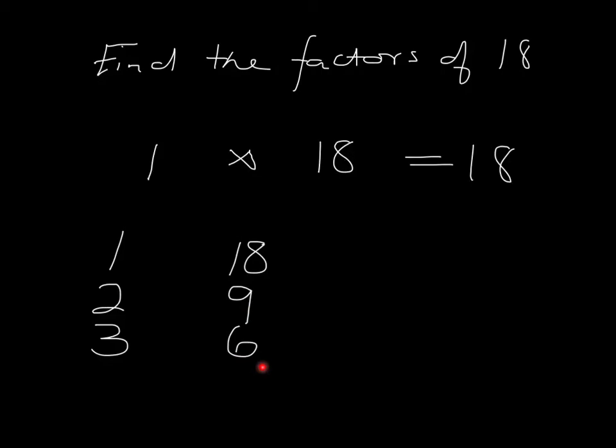Next number along, 6. Oh, hang on a moment. I've already got 6 in my list. And as soon as I start to repeat myself, I know I've got all the factors. So the factors of 18 are 1, 2, 3, 6, 9 and 18. Finished.